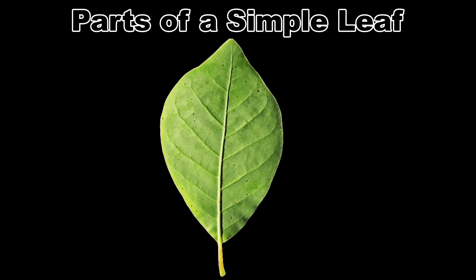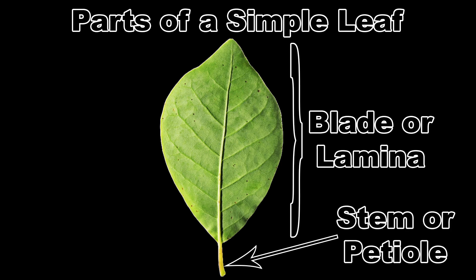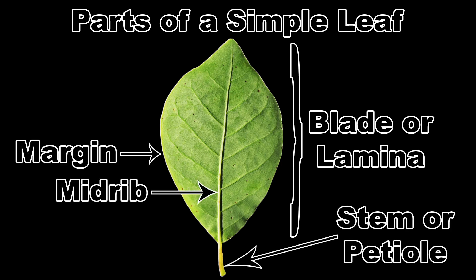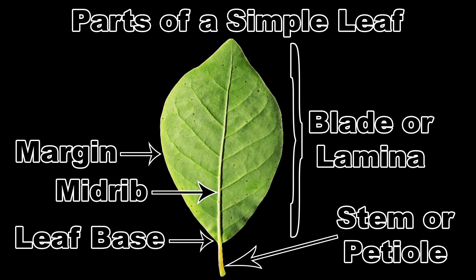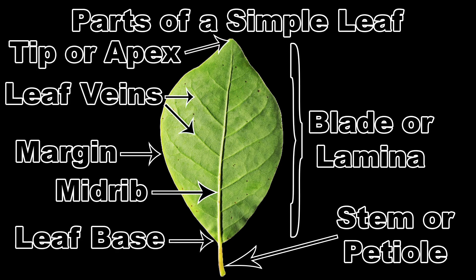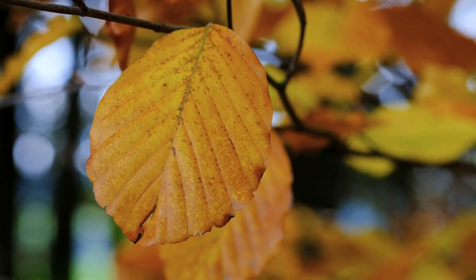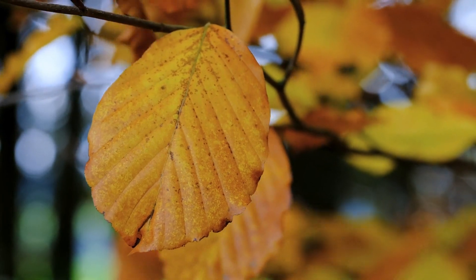A simple leaf is made up of the leaf blade or lamina, and the stem or petiole. The edge of the leaf is called the margin, and there is a midrib that runs from the leaf base to the tip or apex. Coming off from the midrib are several leaf veins. As the name says, a simple leaf is pretty darn simple.